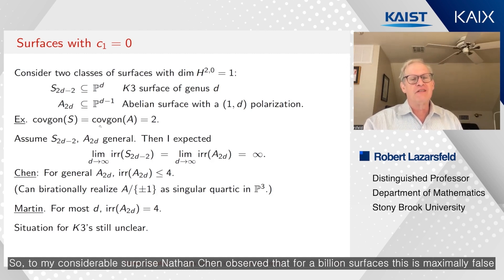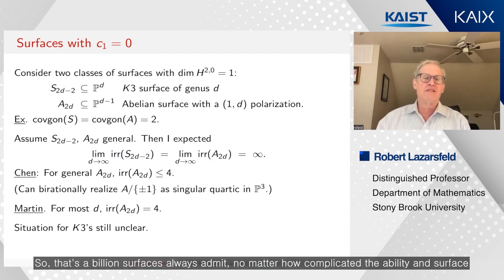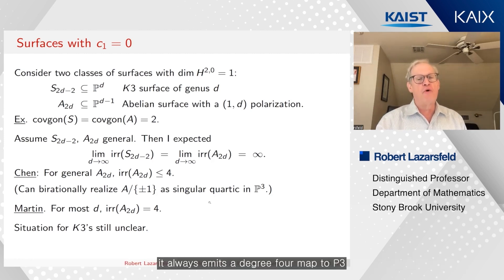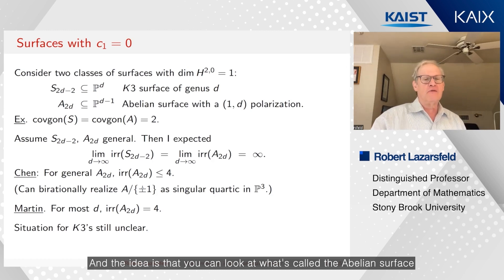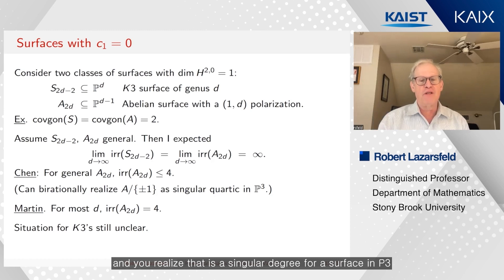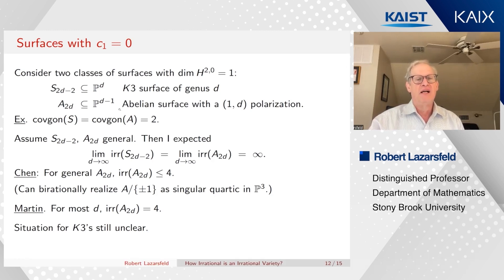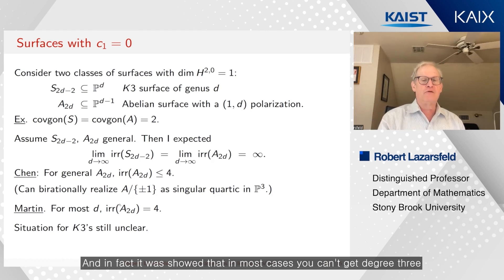So to my considerable surprise, Nathan Chen observed that for abelian surfaces, this is maximally false. So not only does the degree of irrationality not go to infinity, it's always at most four. So these abelian surfaces always admit, no matter how complicated the abelian surface, it always admits a degree four map to P^2. And the idea is that you can look at what's called the Kummer surface. You mod out this thing by multiplication by minus one, and you realize that as a singular degree four surface in P^3. So even for these complicated abelian surfaces, they always can be expressed in a funny way as a rational covering of P^2 with degree at most four. In fact, Olivier Martin showed that in most cases, you can't get degree three.